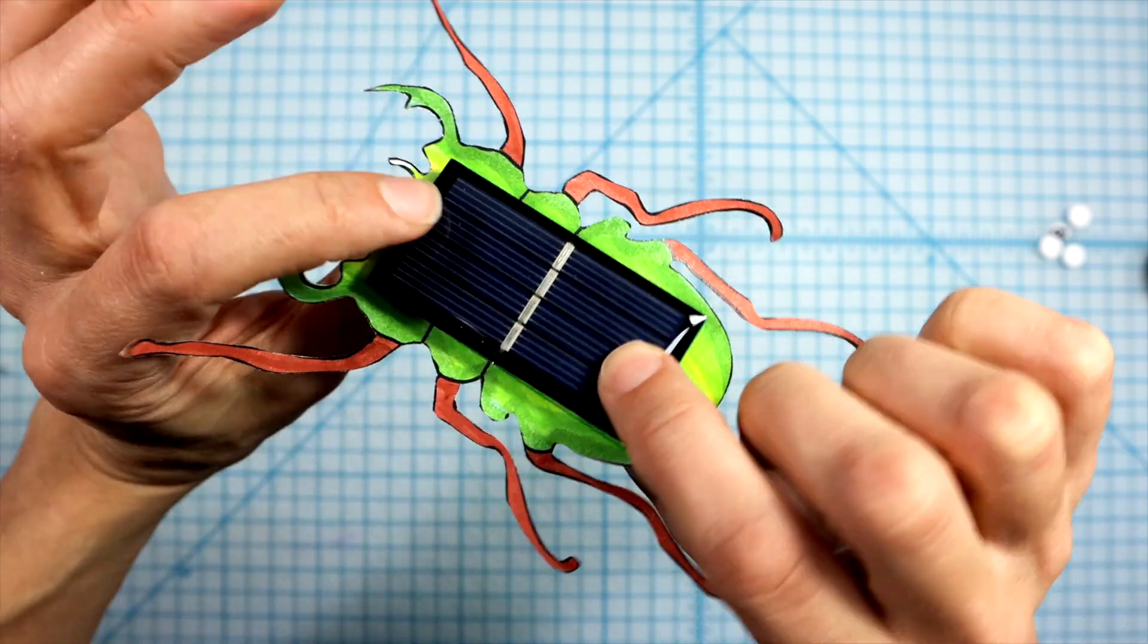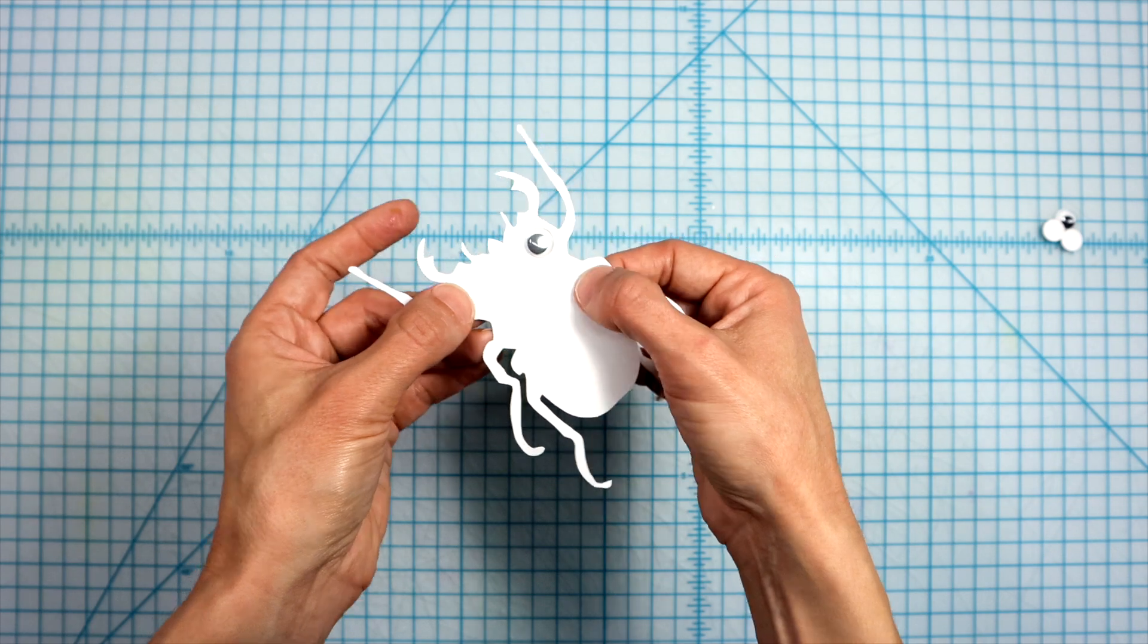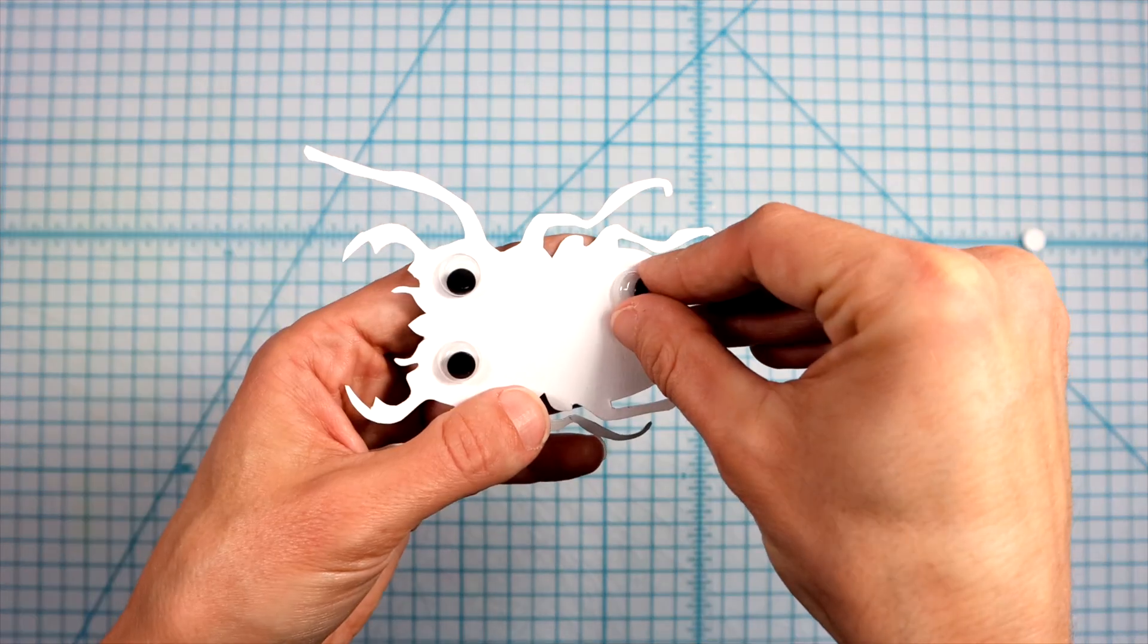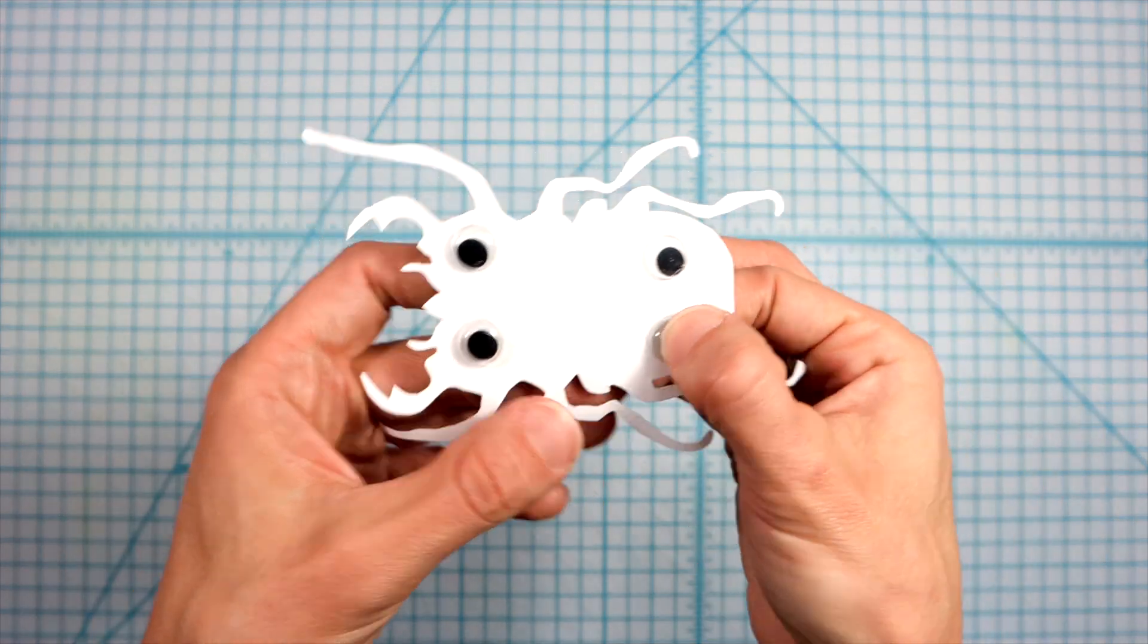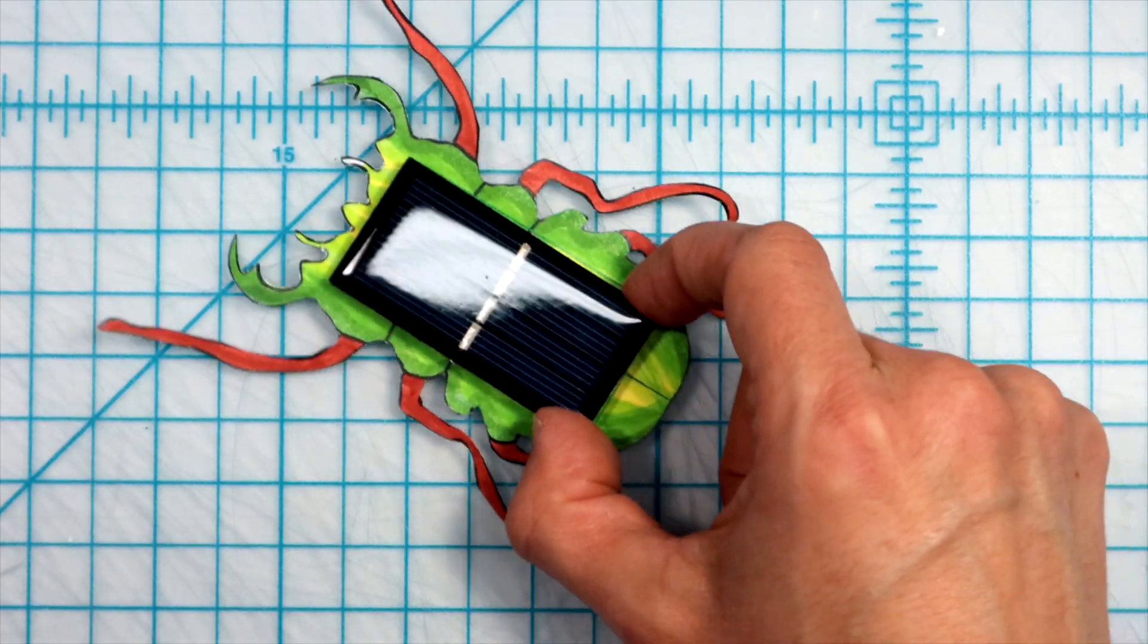Flip the bug over and add the four googly eyes as feet. This will help the bug scurry around easier.